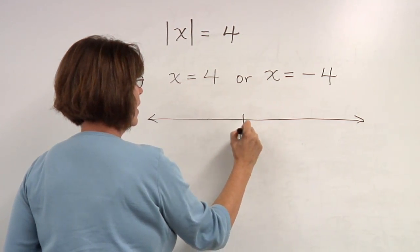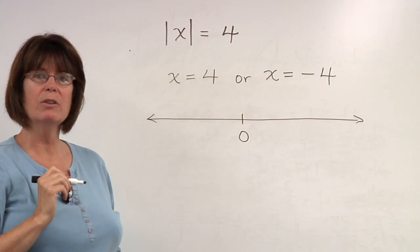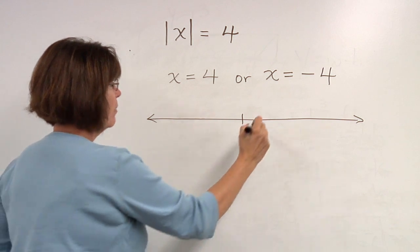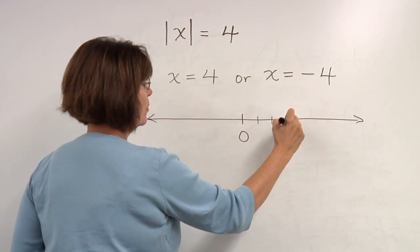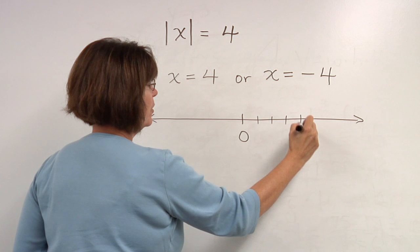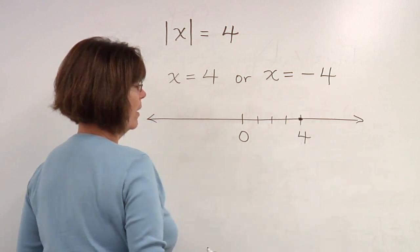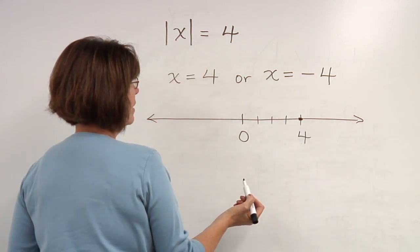Just to understand this better, if we look at a number line and we see that 1, 2, 3, 4 units away from zero, we have 4, its absolute value is 4,